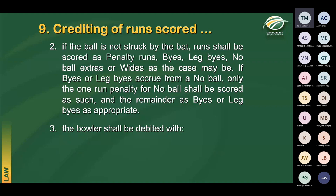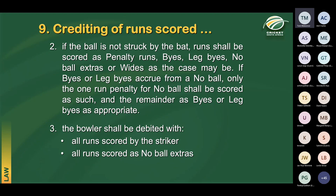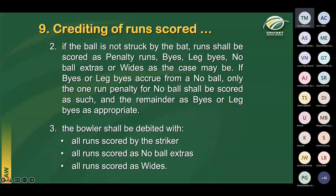If the ball is not struck by the bat, runs are scored as penalty runs, byes, leg byes, no ball extras, or wides as applicable. If byes or leg byes accrue from a no ball, only the one-run no ball penalty is scored as no ball extras; the remainder is scored as byes or leg byes. All runs scored by the striker, all no ball extras, and all wides are debited against the bowler. In limited overs cricket, no ball extras debited to the bowler can be punishing even when the no ball results from a fielder infringing fielding restrictions.